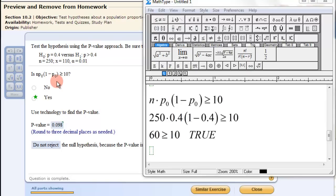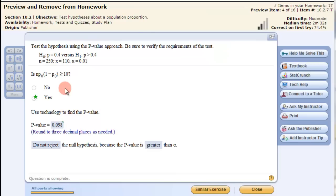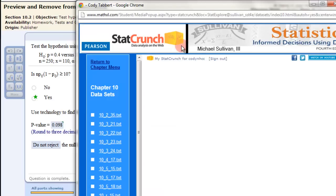So we can move on. That means we can use a normal distribution to use the values to create the p-value. If this was false, we'd have to go through a binomial distribution. Now let's use StatCrunch to get this information. Click the StatCrunch button.